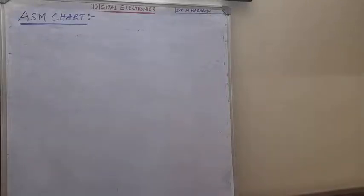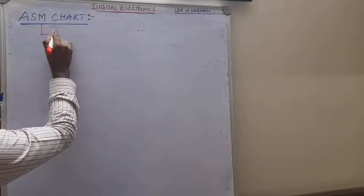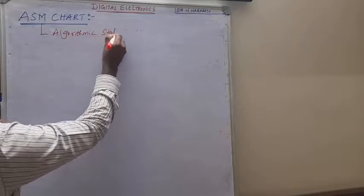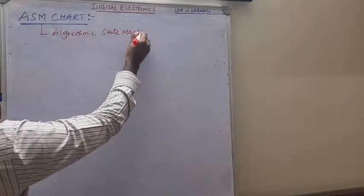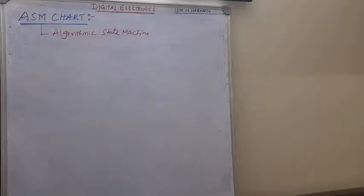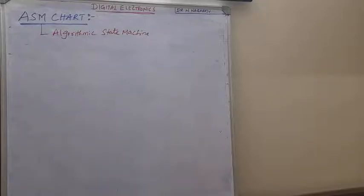Welcome to my channel. In this video I am going to discuss the topic ASM chart. ASM stands for Algorithmic State Machine. This ASM chart is a special type of flowchart for a hardware algorithm. It is used to describe the hardware algorithm and is mainly used to describe the sequential operation of a digital system.